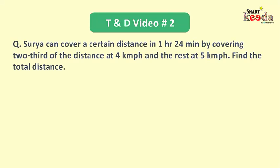Let's now move to the second question. The language of which goes like: Surya can cover a certain distance in 1 hour 24 minutes by covering 2/3 of the distance at 4 km per hour and the rest at 5 km per hour. Find the total distance.